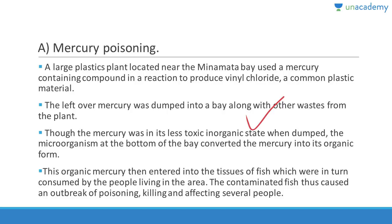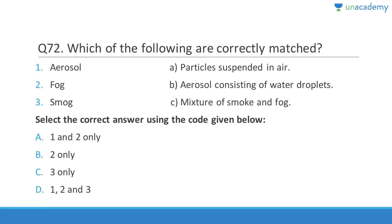Microorganisms at the bottom of the bay converted mercury into organic form. When people ate fish or seafood, it could kill them — that condition is called Minamata disease.